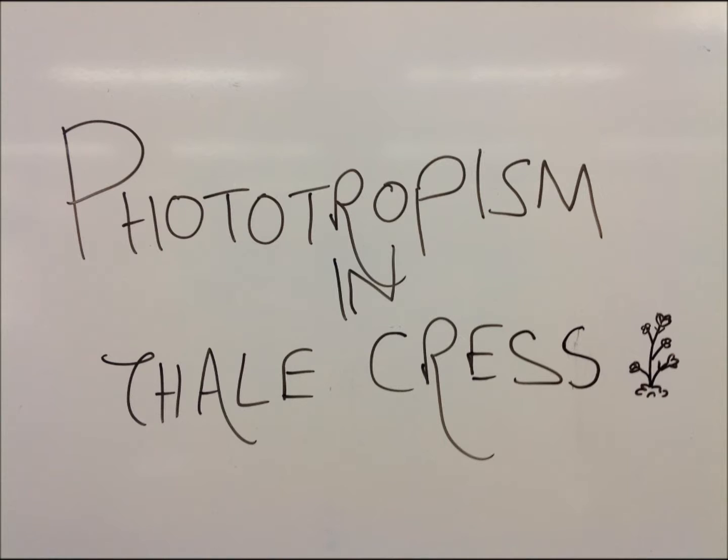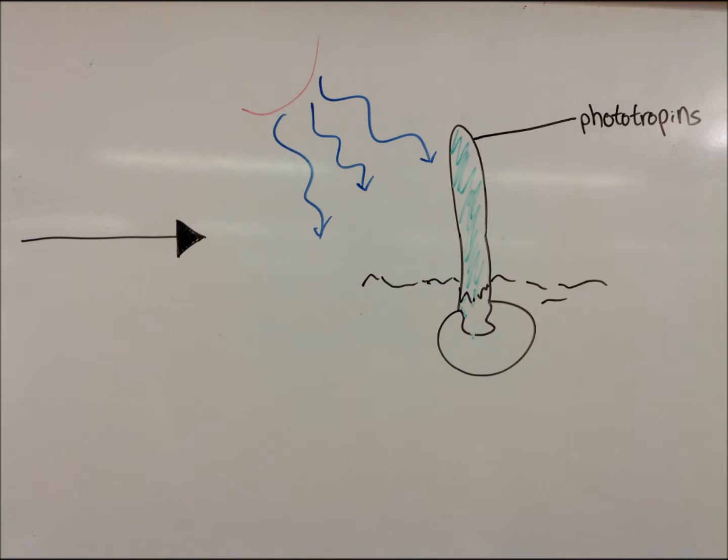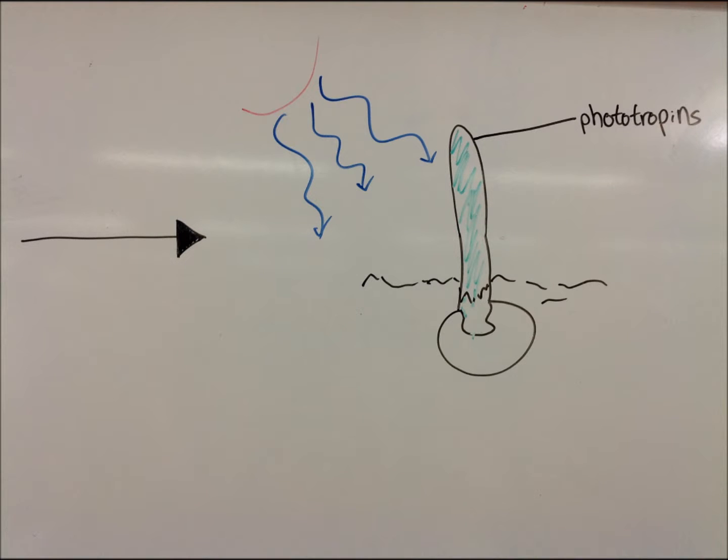A tropism is a directed growth response towards or away from a stimulus, in this case light. Thalcrest shoots contain photoreceptor proteins called phototropins in the cell membranes, which detect blue light.